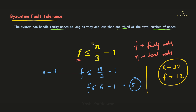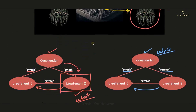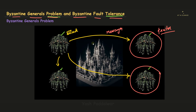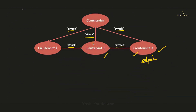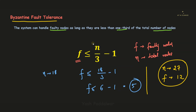I hope Byzantine Fault Tolerance is clear. With that we come to the end of the video — we covered the Byzantine Generals Problem with all the different cases, as well as Byzantine Fault Tolerance with its formula. If you have any doubts, put them in the comments and I'll be happy to solve them. For more such videos, please like, share, and subscribe, hit the bell icon, and follow me on Instagram and Telegram. Thanks for watching, have a good day!